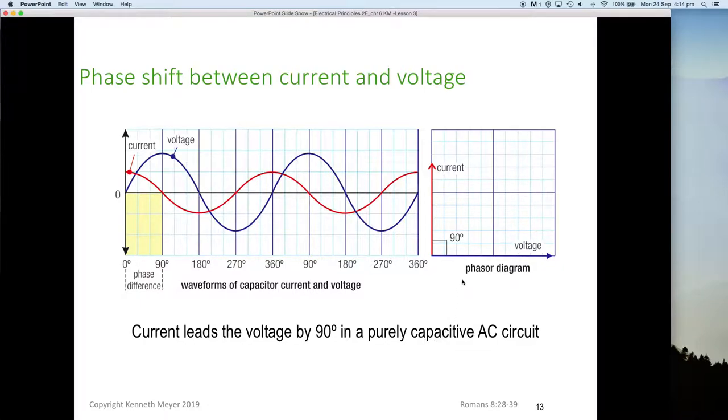On the right hand side, you can see how we would draw this as a phasor diagram, with voltage as our reference on the horizontal, and remembering phasor diagrams rotate anti-clockwise, then the current has to be vertical, because it is leading the voltage by 90 degrees.